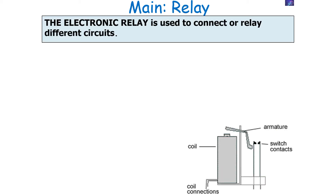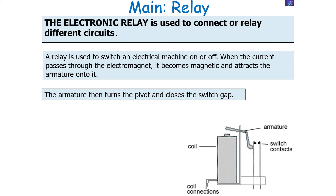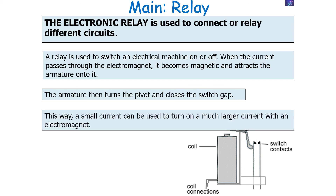The final use of an electromagnet we're looking at is the electronic relay, which is used to connect or relay different circuits. A relay is used to switch an electrical machine on and off, the most famous example being in a car engine. When the current passes through the electromagnet it becomes magnetic and attracts the armature onto it. The armature then turns the pivot and closes the switch gap, allowing a small current to switch a much larger current.